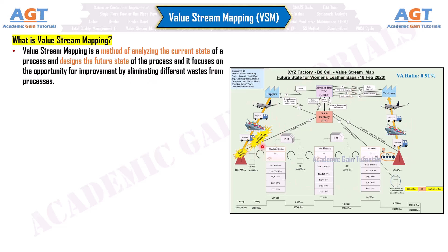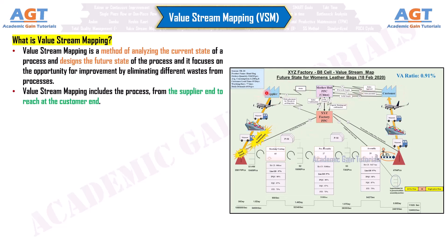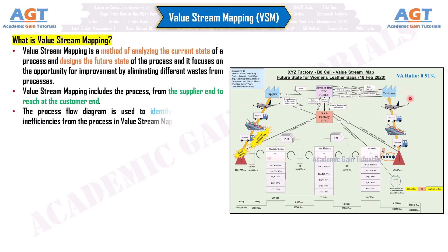Value Stream Mapping includes the process from the supplier end to reach the customer end. The process flow diagram is used to identify the waste and inefficiencies from the process in Value Stream Mapping.